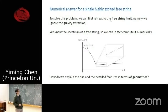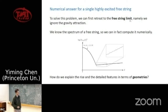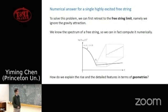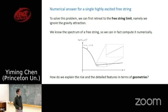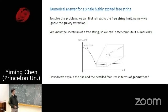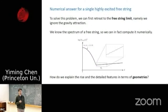To solve this puzzle, we first retreat to the free string limit to build intuition, ignoring all gravity. The spectrum of the free string gas is known from Polchinski's book, and we can compute the spectral form factor numerically. One finds an initial decay predicted by the winding modes with winding number ±1, but the curve doesn't decay forever — at a time of order one in the string length, it bends and starts to rise. Zooming into the rising part reveals a series of bumps, and the question is how to explain this rise and the detailed features in terms of geometries.